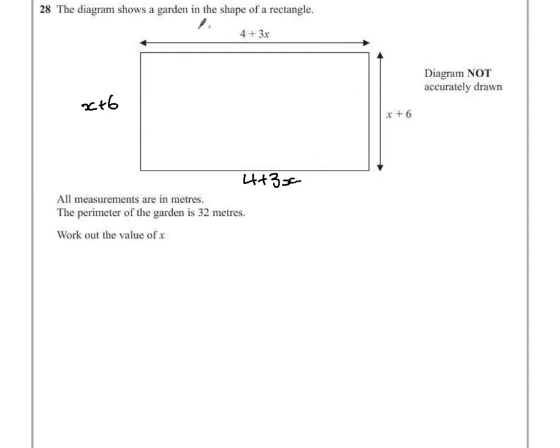If we add all of those values together we'll get the perimeter. Add all the numbers first: 4, 4, 6, and 6 gives us the number 20. Add all the x's together: x, 2x, 5x, add 8x. And we know that value must equal 32 metres.